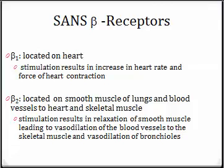Beta 1 receptors are located on our heart. Beta 1 stimulation results in an increase in heart rate and force of contraction. Think of it this way: we have one heart, so the majority of receptors on the heart are beta 1. We also have beta 2 receptors, located on the smooth muscle in our lungs and the blood vessels leading to our heart and skeletal muscle. Stimulation of a beta 2 receptor results in relaxation — vasodilation of those blood vessels and bronchodilation.